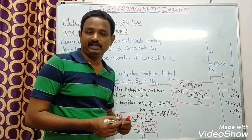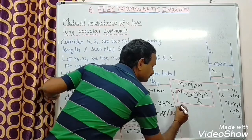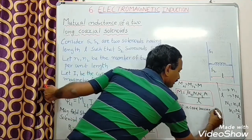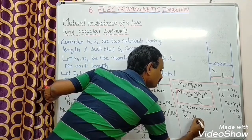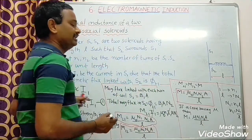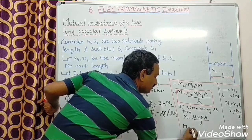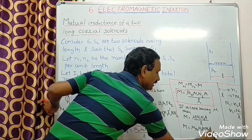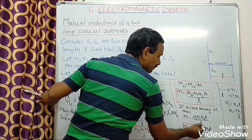For suppose, if I use any core material which has magnetic permeability μ, then I can replace μ0 with μ. So, M equal to μ into N1 N2 A by L. Instead of μ, I can write μR into μ0, into N1 N2 A by L. So, I got mutual inductance in terms of relative magnetic permeability.